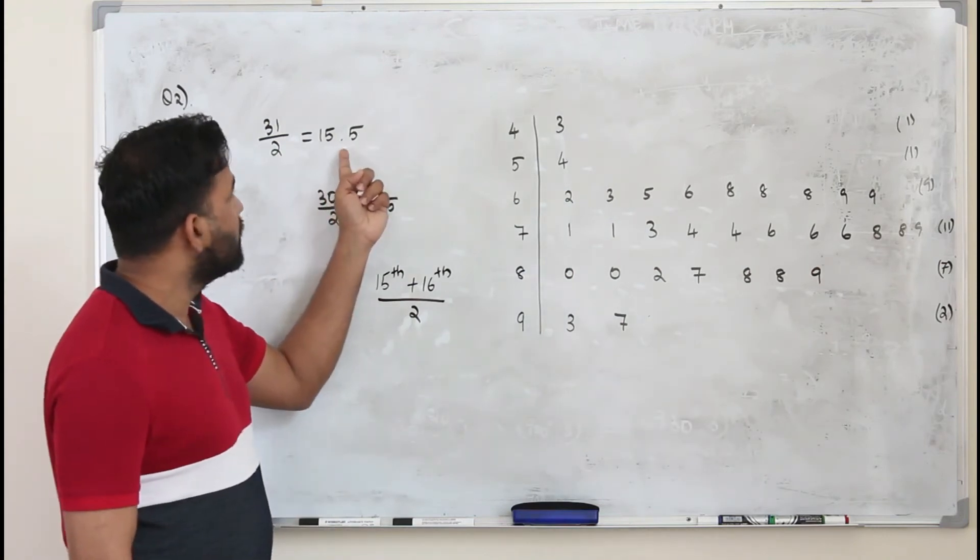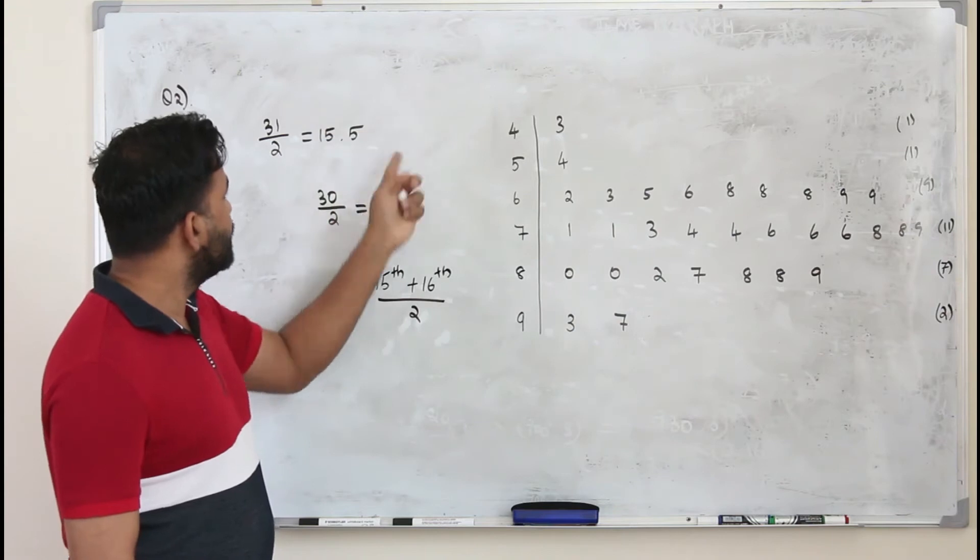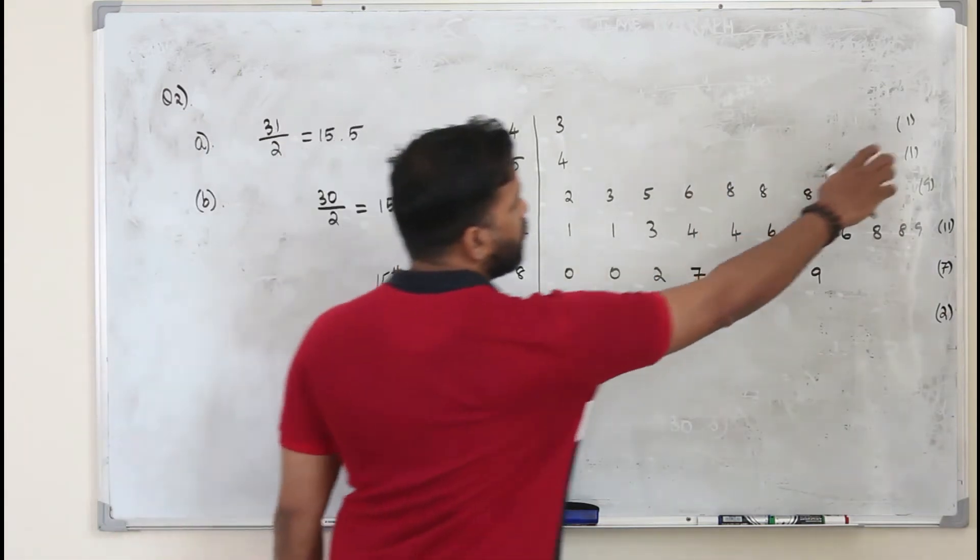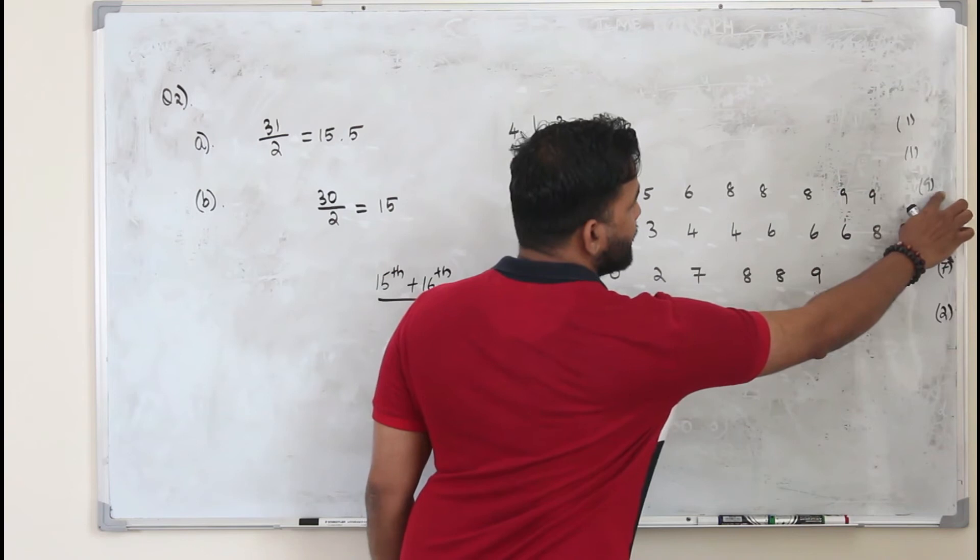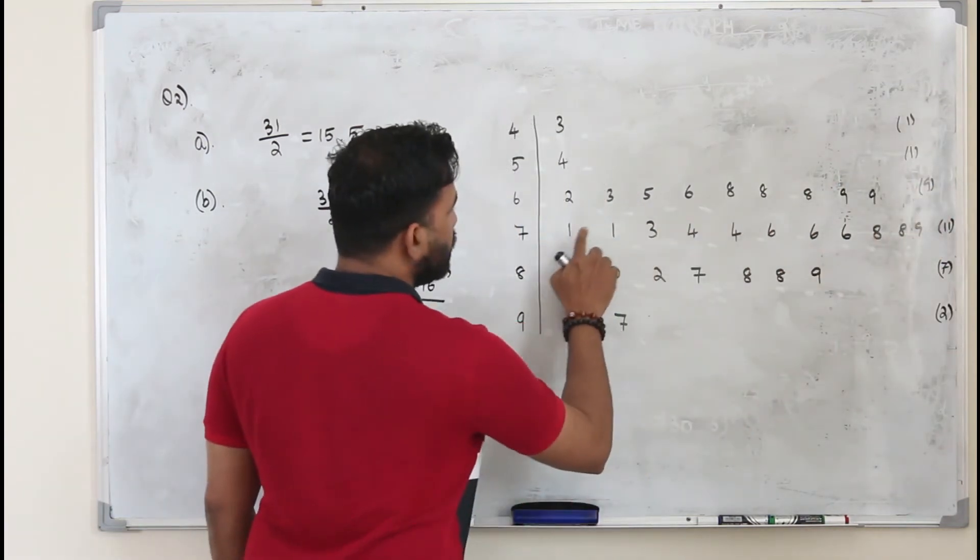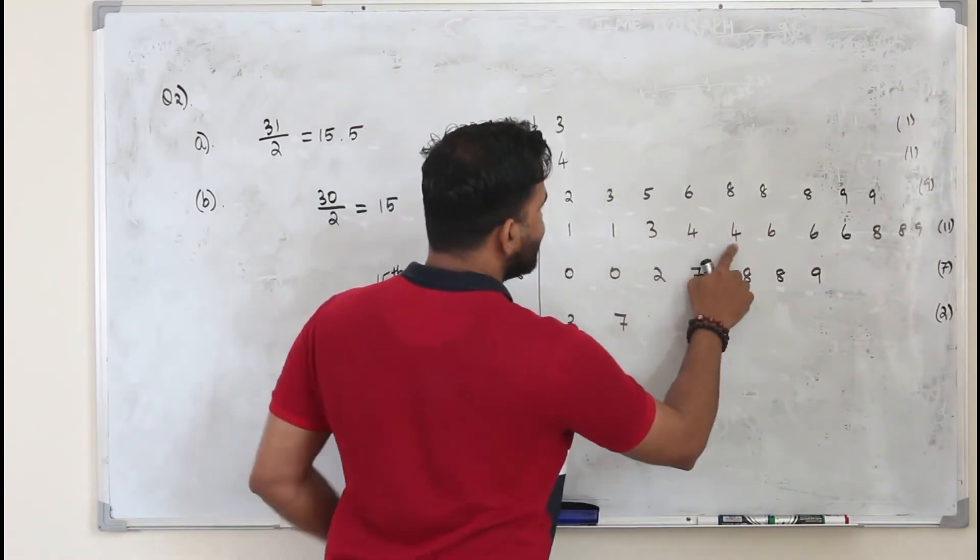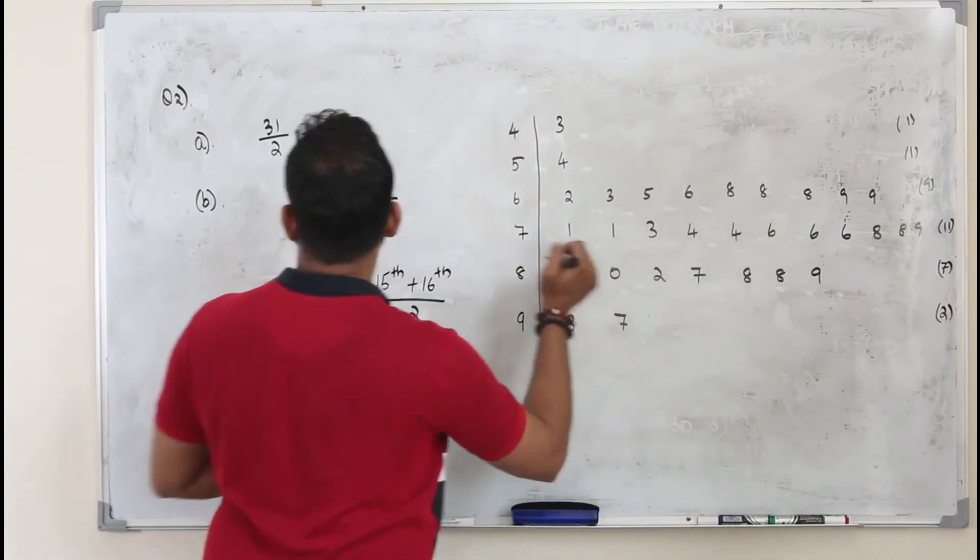But when you get a decimal number, take the next entry, 16th entry. So here you have 1, 2, 2 plus 9 is 11, 12, 13, 14, 15, 16. So 74 is the median.